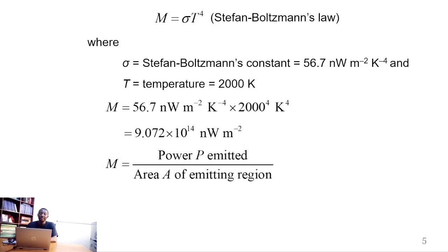Given that the excitance is power emitted divided by the area of the emitting region, we make P the subject of the formula so that we substitute the rest of the variables to obtain the power emitted.